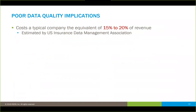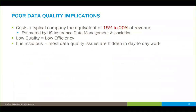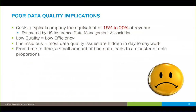More generally, poor information quality can cost any organization the equivalent of 15 to 20 percent of their annual revenue, based on a study by the U.S. Insurance Data Management Association. Low quality means low operational efficiency — it's insidious, hidden from day-to-day work, but you're grinding away less efficiently than you could be. From time to time, a small amount of bad data can lead to a disaster of epic proportions.